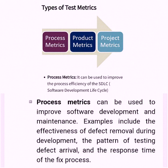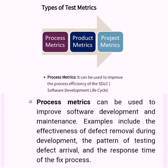First, let's see about what is process metrics. The name implies the metrics used to check the process. Process metrics are used to improve the process efficiency of the STLC. Once a process is complete, the quality improves through process metrics, which help improve the overall product quality.